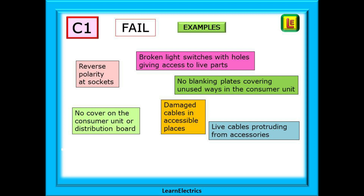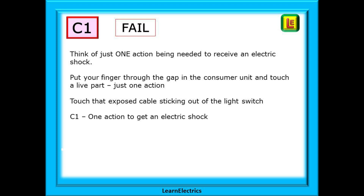Pause the video and take a moment to consider them — they all have one thing in common. Think of just one action being needed to receive an electric shock. Put your finger through the gap in the consumer unit and touch a live part — just one action. Touch that exposed cable sticking out of the light switch — just one action. C1: one action to get an electric shock.